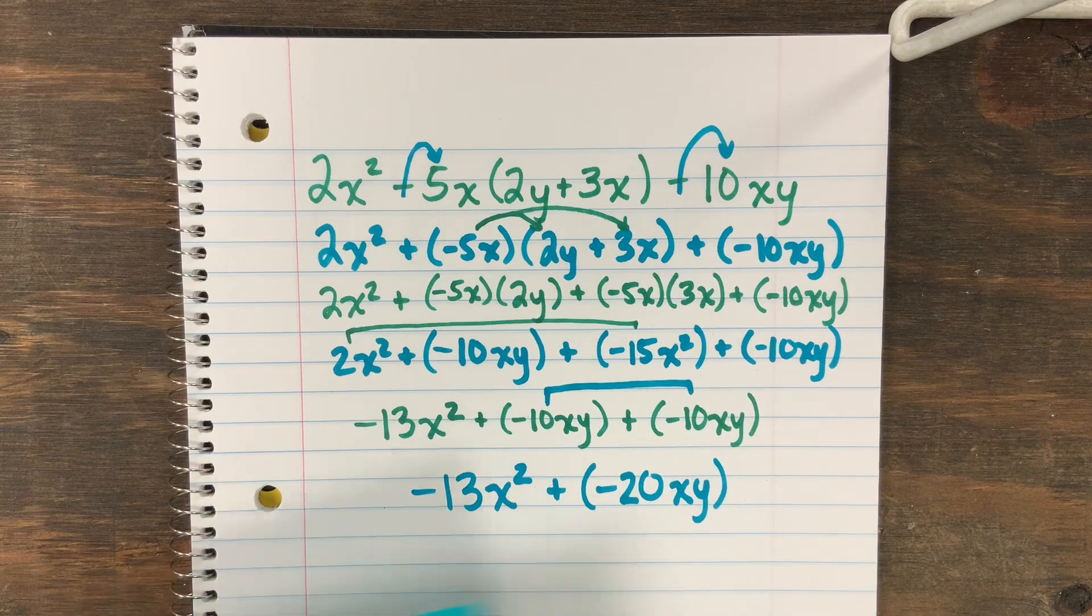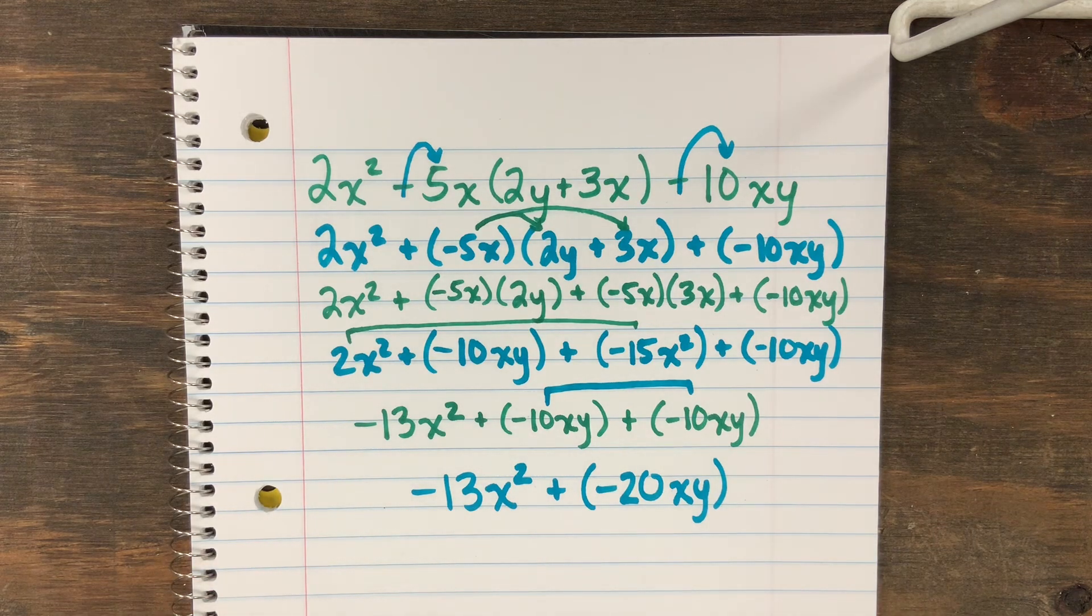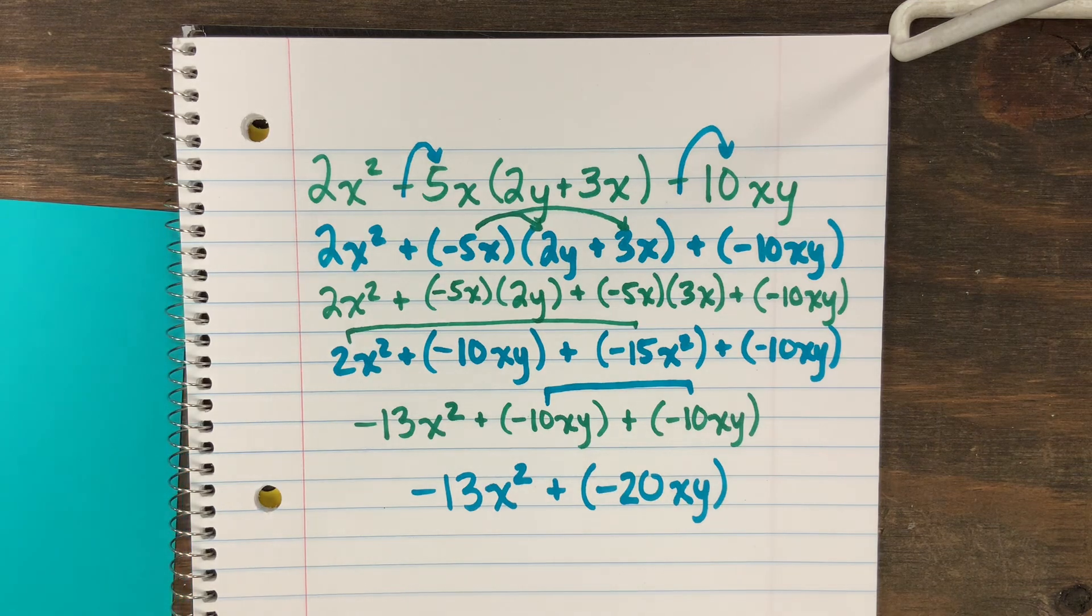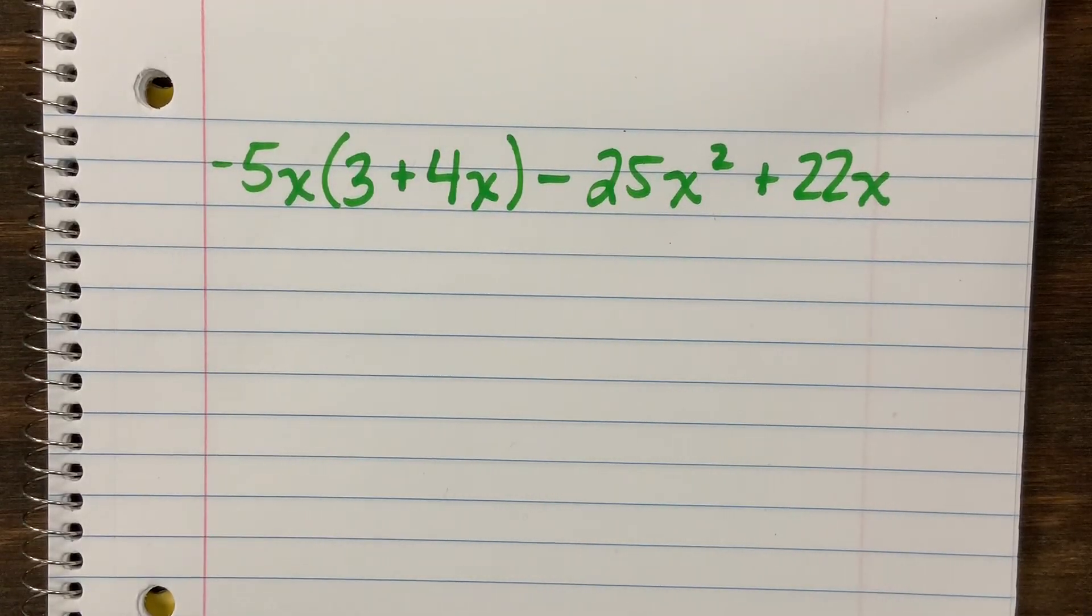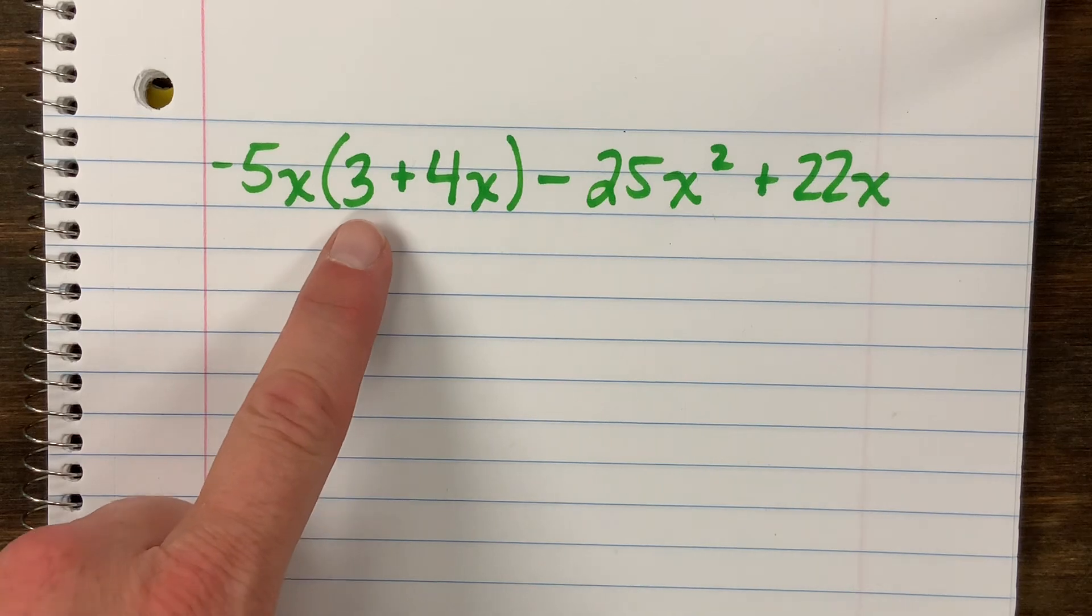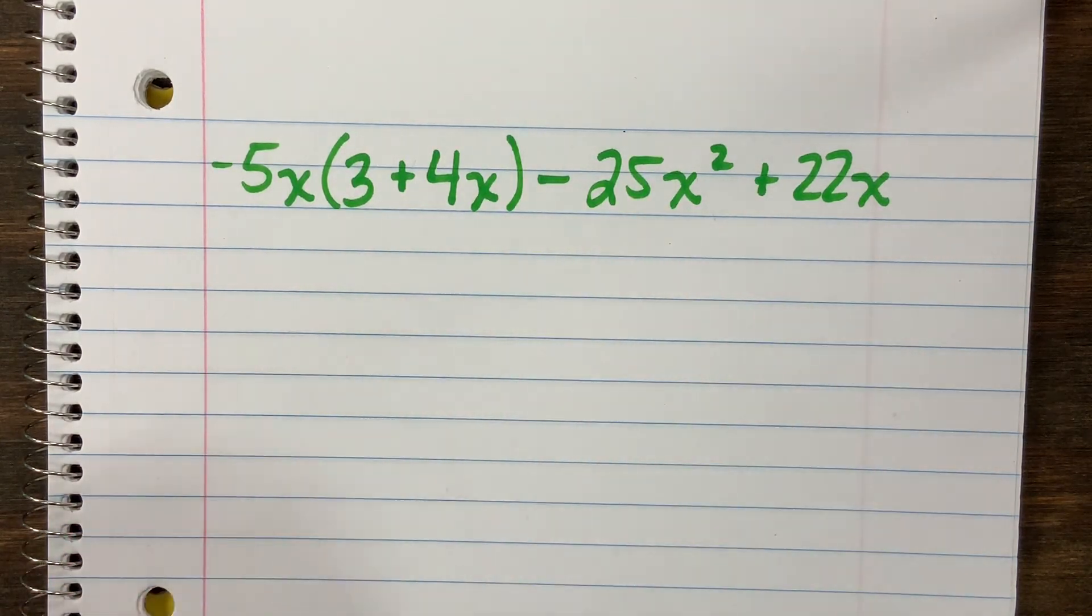All right, so we're in second period. Here is the problem: we have the opposite of 5x times the quantity 3 plus 4x minus 25x² plus 22x. So go ahead and pause the video and try to solve it, please.